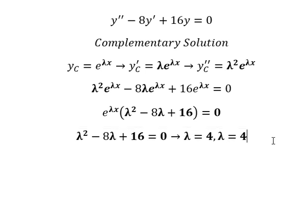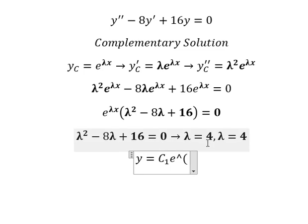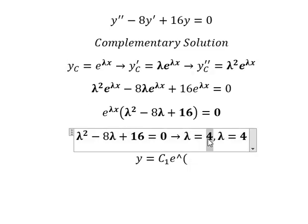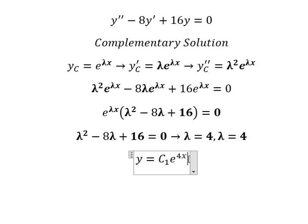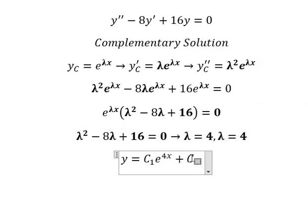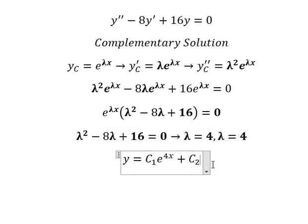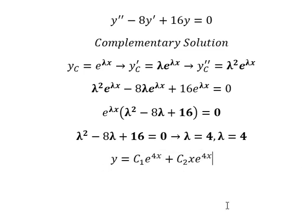So the final answer is: y equals c₁ e to the power of 4x, plus c₂ x e to the power of 4x. We use the x multiplier on the second term because we have repeated roots — both lambda values equal 4. This is the final answer.